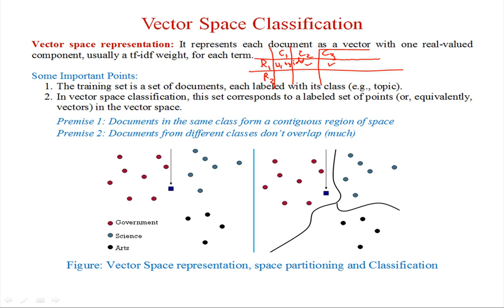Now, an important point is the training set. In document clustering, which is an unsupervised kind of algorithm, no prior information is required. But classification is a supervised algorithm. Here we use a set of documents with their labels or classes. For example, all red circles represent documents related to government, all blue circles represent documents related to science, and all black circles represent documents related to arts.